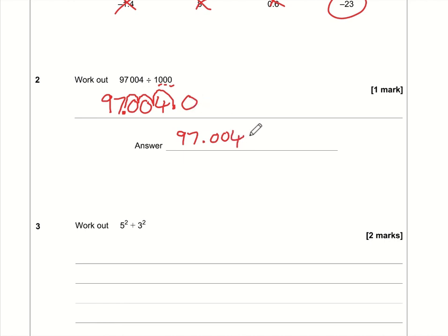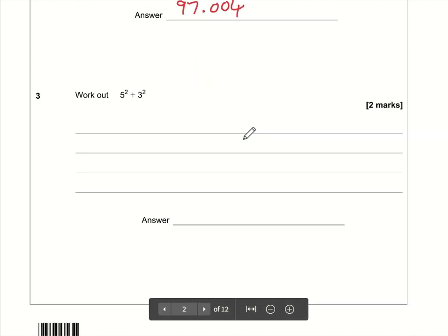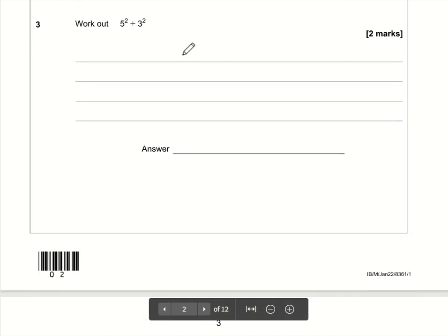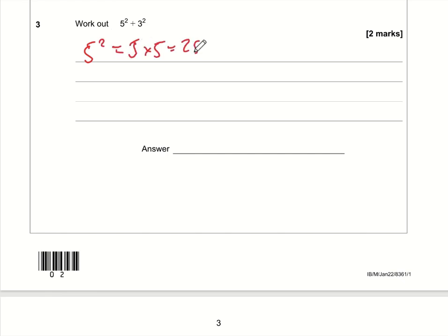Question number three: 5² + 3². Well, we need to remember first of all that 5² is 5 multiplied by 5, which is 25, and we also need to remember that 3² is 3 multiplied by 3, which is 9. So the question is now what is 25 plus 9? 25 plus 10 is 35, go back one: 34.